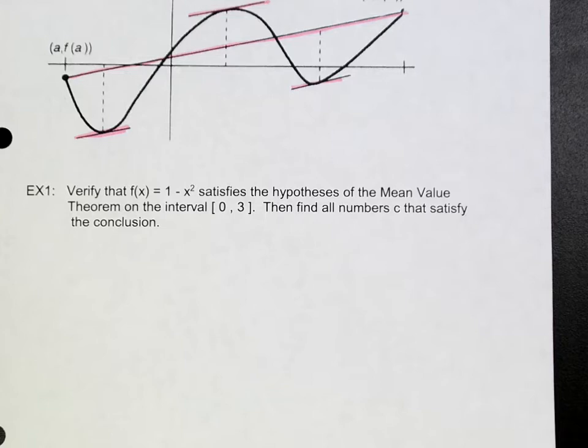So how do we do this in a problem? In example number one, they ask you to verify that F of X satisfies the hypotheses of the Mean Value Theorem on the interval [0, 3], and then they want you to find all the numbers C that satisfy the conclusion.